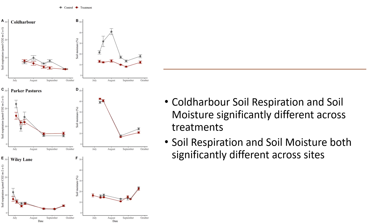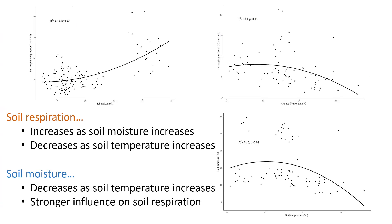A significant difference was found across the three sites for both respiration and moisture. When sites were analyzed individually, however, Cold Harbor was the only one to have significantly different respiration and moisture values between the control and the treatment soils. And contrary to my expectations, the control soils exhibited higher values for both respiration and moisture than the treatment soils. I believe this is due to the high degree of influence that soil moisture has on microbial activity and respiration. All sites and treatments were pooled, and soil respiration was found to increase with increasing soil moisture, which is to be expected as soil moisture stimulates microbial activity and the release of CO2 via their respiration.